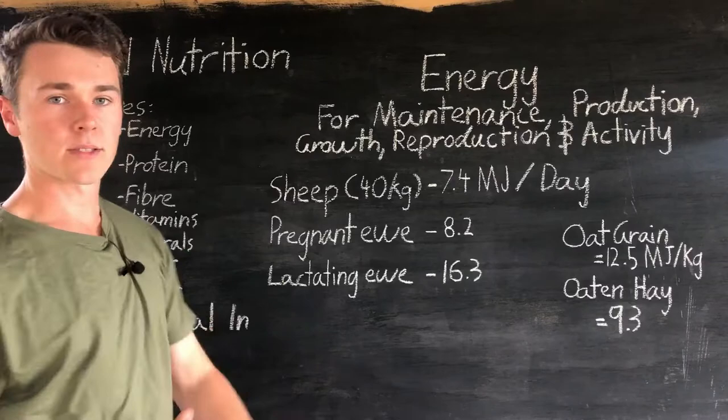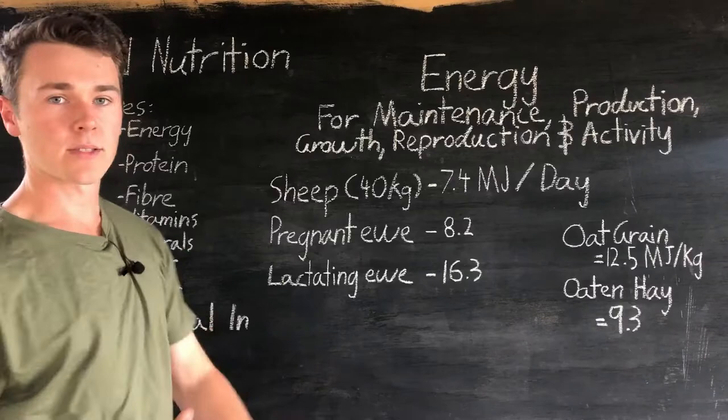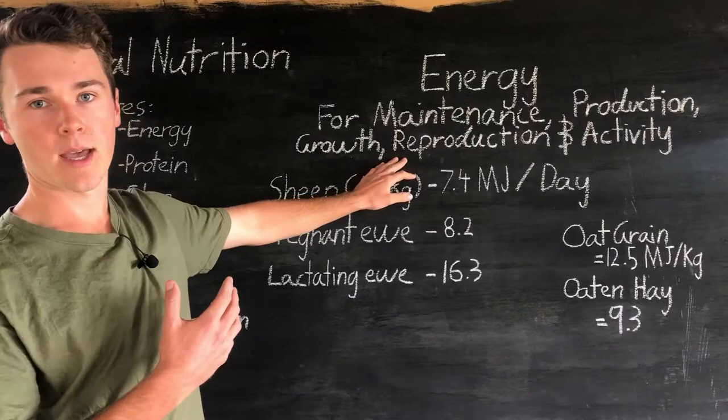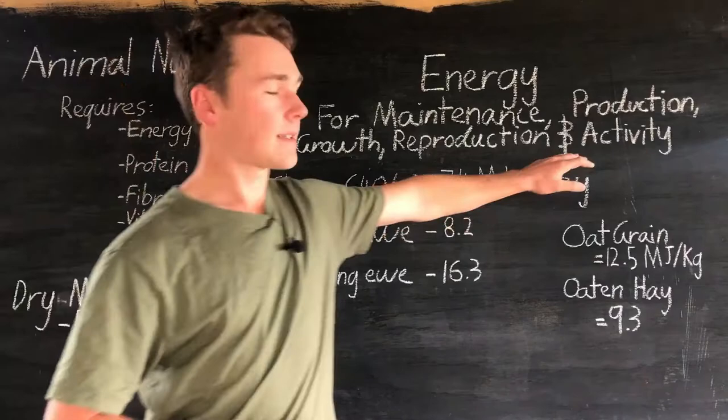Growth — building muscle mass — also requires energy. Next is reproduction: animals need to grow their reproductive organs, and female animals need to be able to grow their young during pregnancy, so energy is required for that. Finally, activity — just moving around doing animal things — also requires energy.